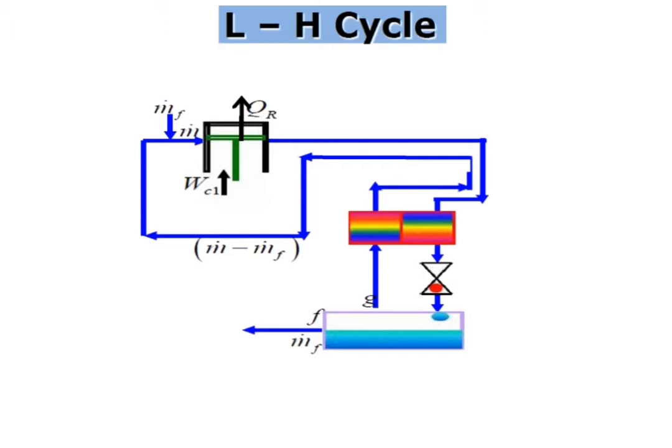In the previous video we already discussed about the Linde-Hampson cycle. It consists of a compressor, a heat exchanger, and an expansion device. The medium entering into the system is M-dot entering into the compressor. After compression it enters a heat exchanger, then passes through an expansion device. During the process, quantity M-dot-F is liquefied and diverted, while the remaining quantity M minus M-dot-F is returned back to the compressor.